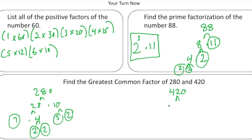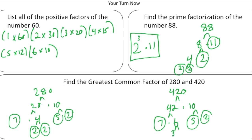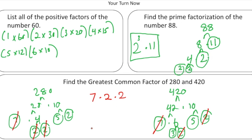For 420: 420 breaks down to 42 and 10. 10 is 5 and 2, both prime. And 42 is 7 times 6. 7 is prime, and 6 is 3 and 2, both prime. Now we look at the prime factorizations and pull out the common factors. There's a 7 in each — common factor of 7. There's a 2 in each — another common factor. We have another 2 paired with another 2 — another common factor. And there's a 5 in each — another common factor.